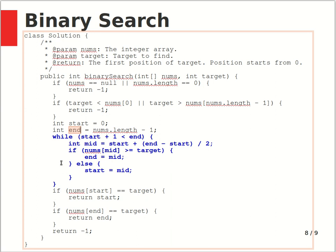The start pointer moves toward the end of the array, and the end pointer moves backwards toward the front during the while loop. The condition for continuing iterations is: start plus one is smaller than end. When start plus one becomes greater than or equal to end, the loop stops.